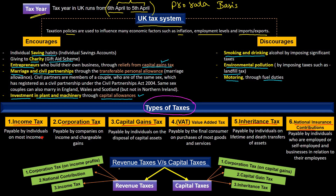Now we categorize few taxes as revenue taxes while others as capital taxes. Revenue taxes include corporation tax on income profit, national insurance contribution, and income tax. In capital taxes we have corporation tax on capital gain, capital gains tax, and inheritance tax. The corporation tax on capital gain is different from corporation tax on income profit — just remember this difference.